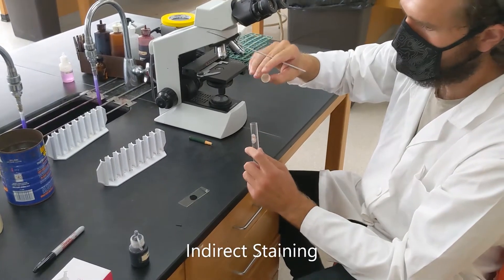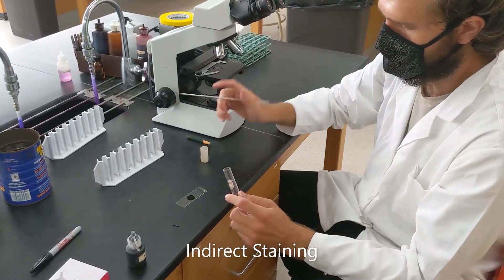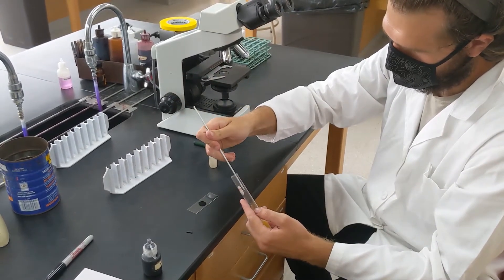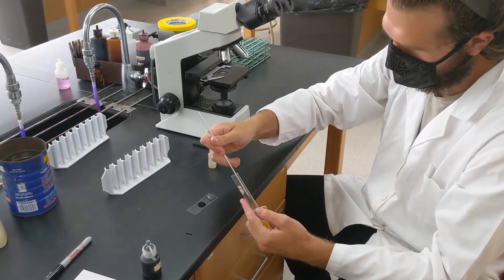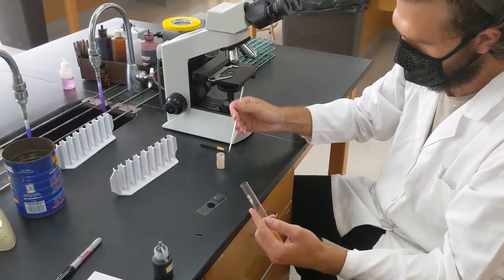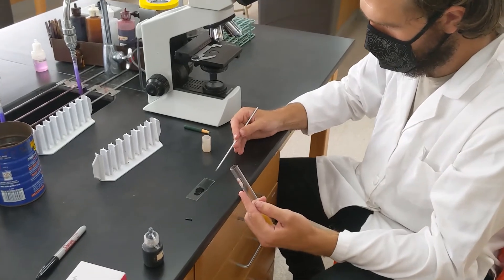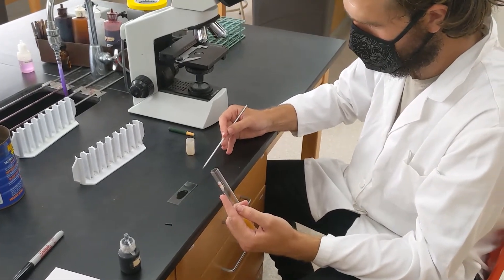So for our indirect stain, we've got our drop of nigrosin on the slide. I'm going to take our mix culture, the same thing that we used to streak our plates, and add that to the stain. Then spread the stain out all across the surface of the slide.